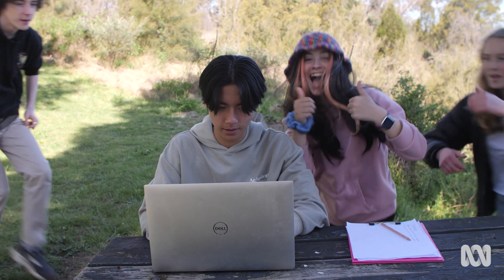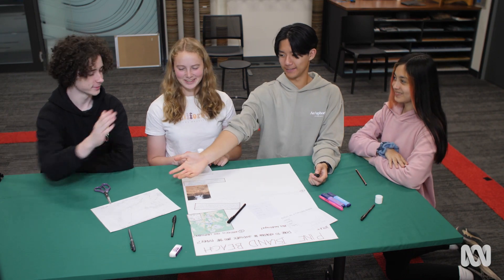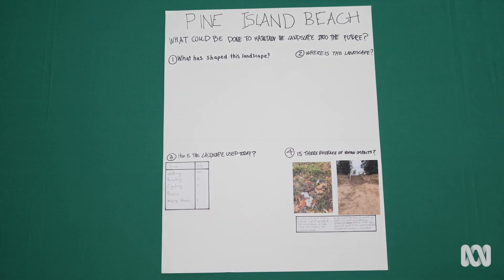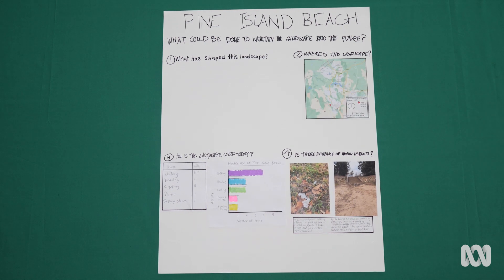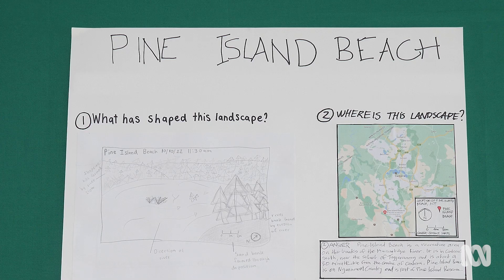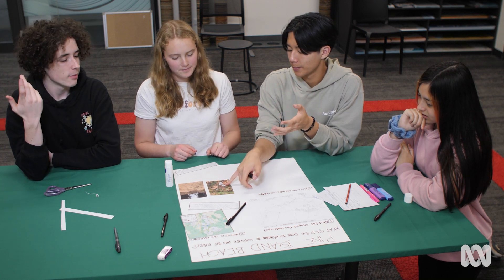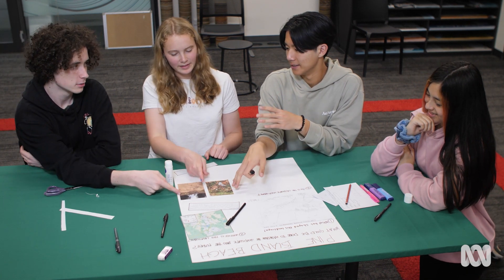Great work, geographers! By doing these fieldwork activities, you've been able to investigate some of your sub-questions. This has helped you to answer your research question. The primary data you've gathered from your fieldwork can be added to your fieldwork display along with any secondary data that you've gathered as well. Think about the research question again: what could be done to maintain this landscape into the future? How does all the information on your display, together with the notes that you've made, help you to answer this question? Have a class or group discussion and then decide on your answer.